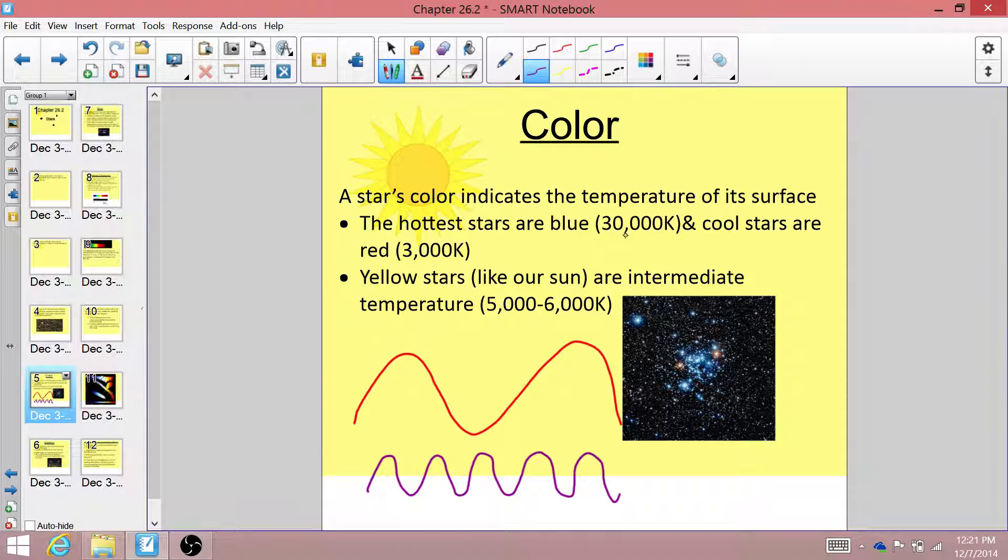So the hottest stars are very, very blue, and cool stars are very, very red. Now if you think about our sun, our sun is a yellow star, so it's a pretty intermediate temperature. It's in between.